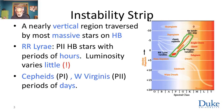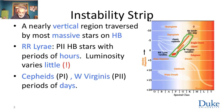Most stars will cross the instability strip as massive stars as part of their horizontal branch evolution. RR Lyrae variables are very interesting. They have periods of hours, and you can detect them by their spectral signature and by the shape of their light curve.